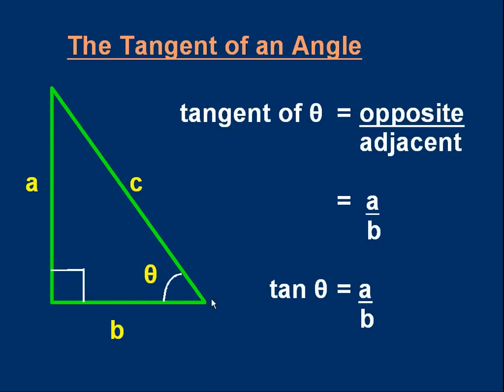And for shorthand, we write tan theta equals a over b. I hope you're familiar with sine, cosine, and tangent. This is tangent. We're not going to be using sine and cosine here.